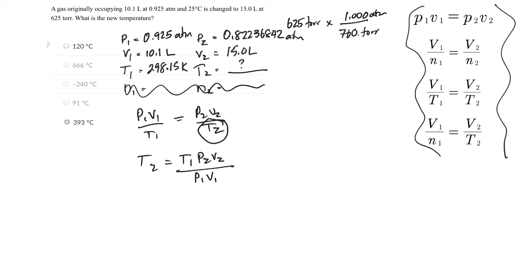Again, remember that what you're looking for goes on the side by itself. Multiply the other cross and then you divide it by the stuff that's across from the T2.